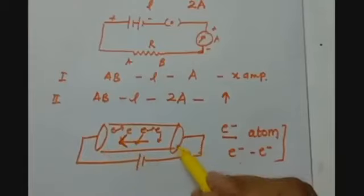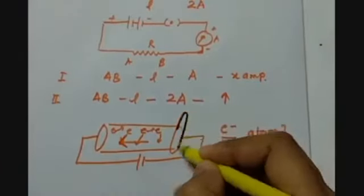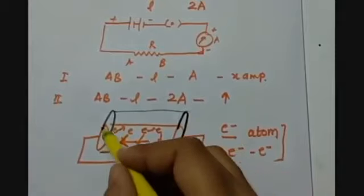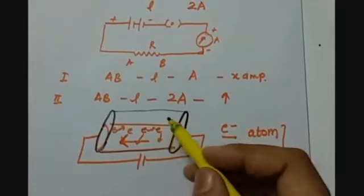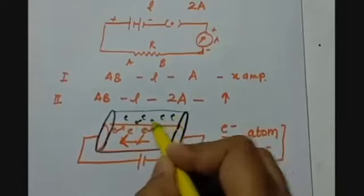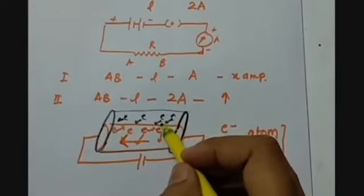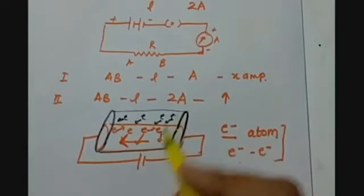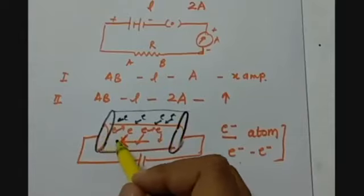What happens when we increase the cross-sectional area? Now the new wire has its cross-sectional area doubled — the thickness of the wire is increased. When the thickness of the wire is increased, the electrons will also try to move in a particular direction and will also strike with atoms or other electrons. But now there is more space available, and hence the resistance decreases, and the electrons drift more easily towards the positive terminal of the battery.